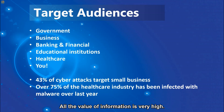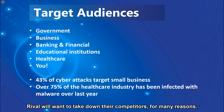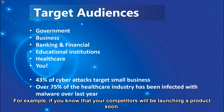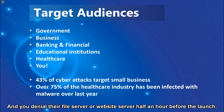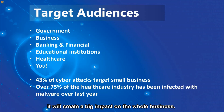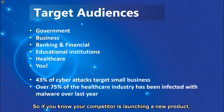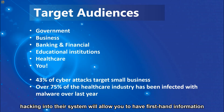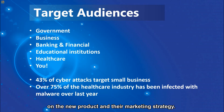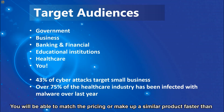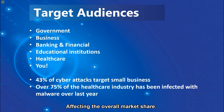Next on the list will be businesses and companies. Rivals want to take down their competitors for many reasons. For example, if you know your competitor will be launching a product soon and you deny their server half an hour before the launch, it will create a big impact on the whole business. Hacking a competitor's data system will allow you to have first-hand information on new products and their marketing strategy — you'll be able to match the pricing or produce similar products faster, affecting overall market share.